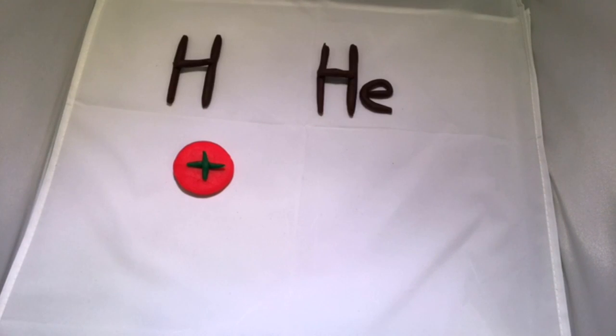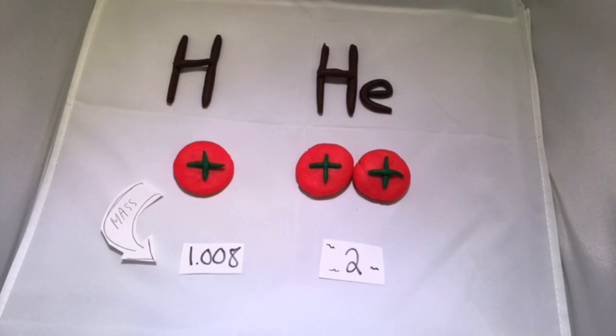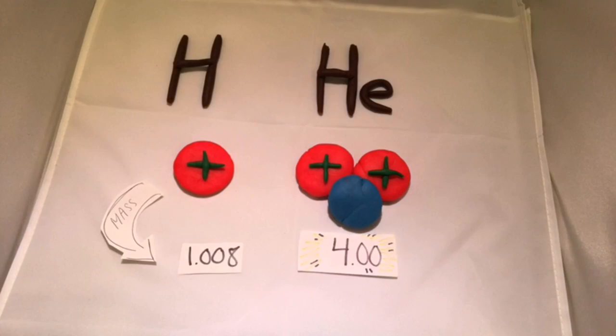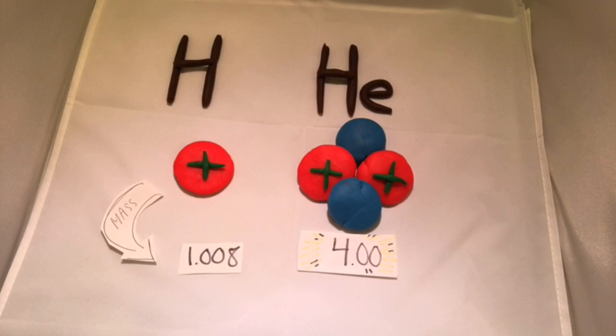Chadwick realized the problem. As hydrogen had one proton, helium had two protons. Therefore, one would think that helium would have twice the mass of hydrogen, but in fact it had four times the mass of hydrogen. There was something else contributing to that mass.